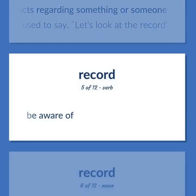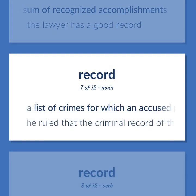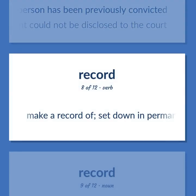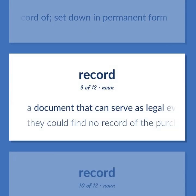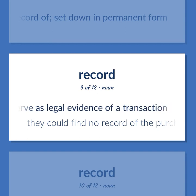Record: be aware of. The sum of recognized accomplishments. Example: the lawyer has a good record. A list of crimes for which an accused person has been previously convicted. Example: he ruled that the criminal record of the defendant could not be disclosed to the court. Make a record of, set down in permanent form. A document that can serve as legal evidence of a transaction. Example: they could find no record of the purchase.